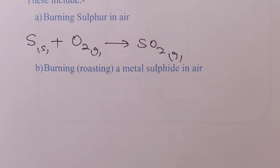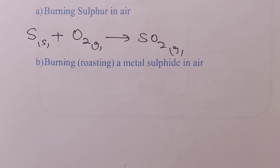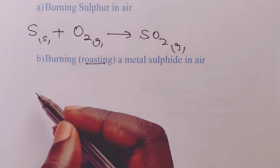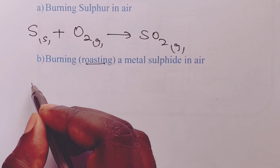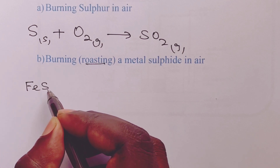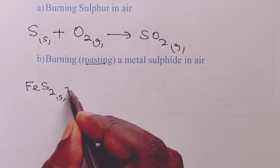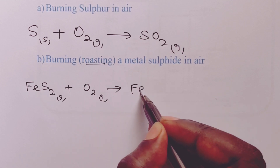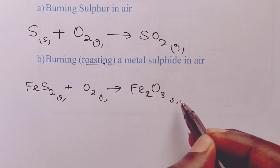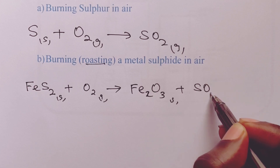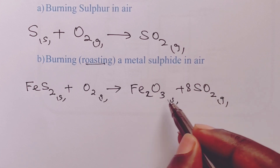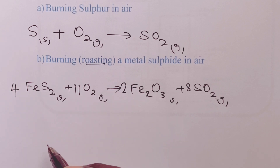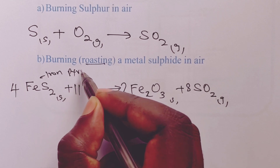We can also obtain sulfur dioxide through roasting of a metal sulfide in air. The first one is iron pyrite (FeS2). If we burn it in air, we obtain iron(III) oxide and sulfur dioxide gas. We balance with an 8 on the gas, a 2 on iron oxide, 11 on oxygen, and a 4 on iron pyrite.